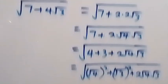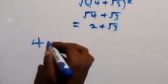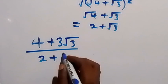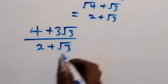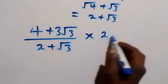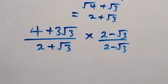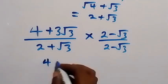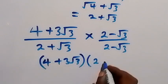So the whole expression now has denominator 2 plus root 3, with numerator 4 plus 3 root 3. To simplify further, we rationalize by multiplying by the conjugate of the denominator: times (2 minus root 3) over (2 minus root 3). This is the standard method of rationalizing the denominator.